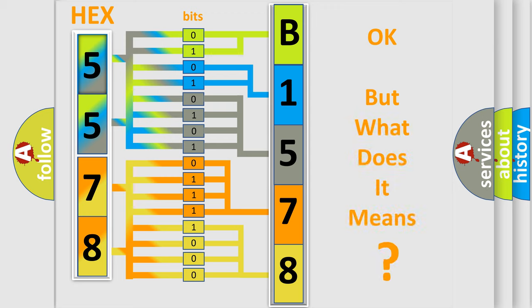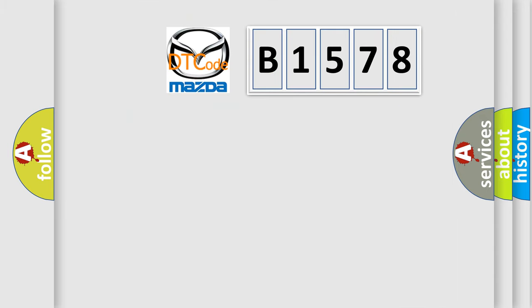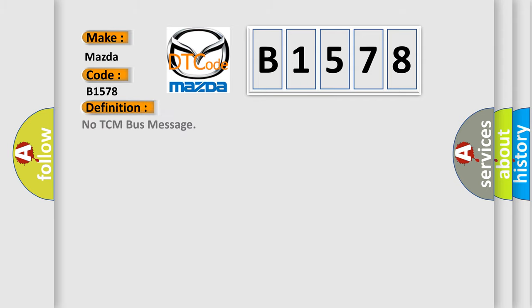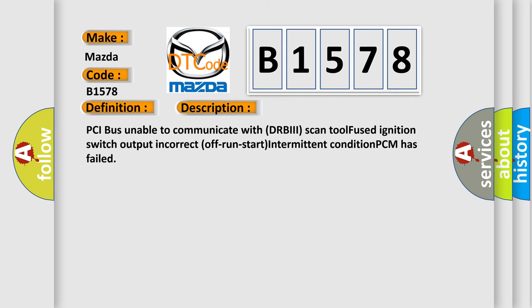The number itself does not make sense to us if we cannot assign information about what it actually expresses. So, what does the diagnostic trouble code B1578 interpret specifically for Mazda car manufacturers? The basic definition is: No TCM bus message. A short description of this DTC code: PCI bus unable to communicate with DRBII tool, fused ignition switch output incorrect, off/run/start intermittent condition, or PCM has failed.